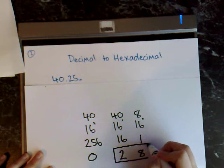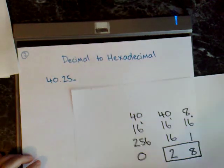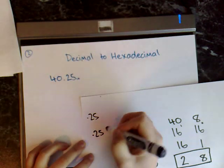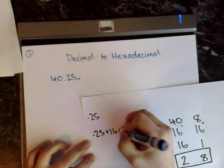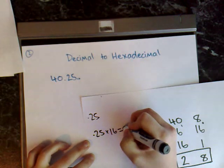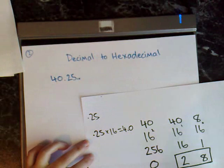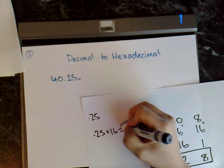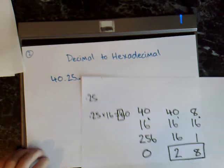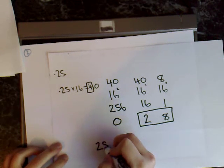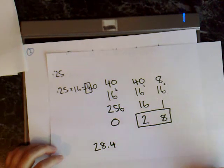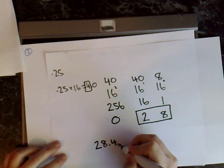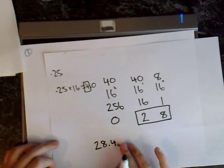So the whole part of our answer is 28. Now for the fractional part: 0.25 multiplied by 16 equals 4.0 exactly, so we can stop — no remainder. The part of the answer we take is 4. Putting that together we get 28.4, and to show it's in hexadecimal form we write a subscript 16 at the bottom. That's the final answer.